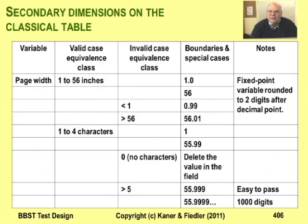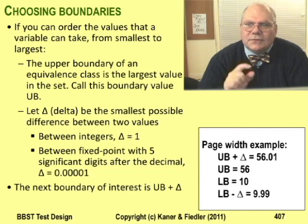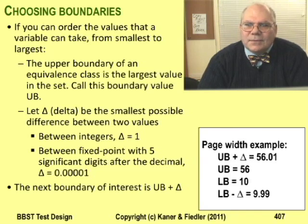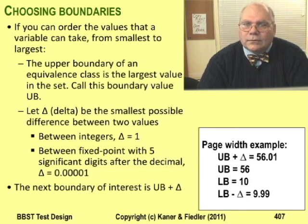Let's look a little more closely at the boundaries on the page width table. Mathematicians often use the Greek letter delta to represent the smallest possible difference between two numbers. Capital delta looks like a triangle. For example, the smallest difference between two integers is one, so for integers, delta equals one. The smallest difference between dollars and cent variables is one cent, so for these variables, delta equals .01.